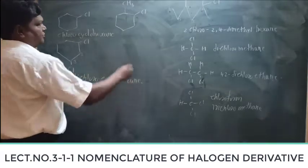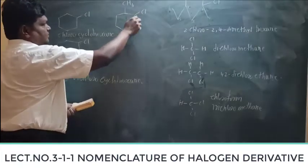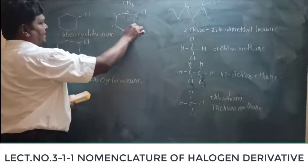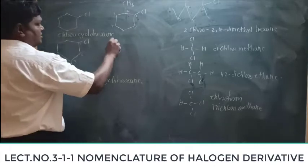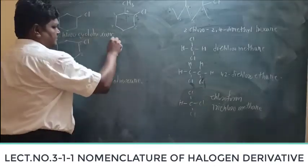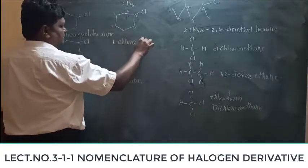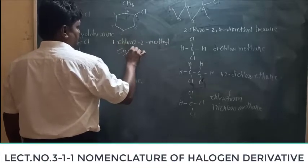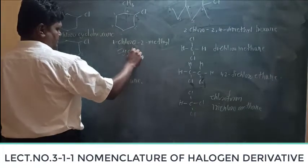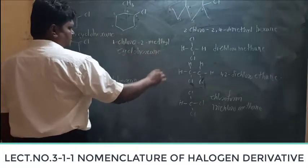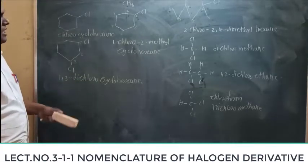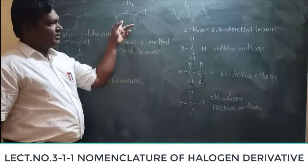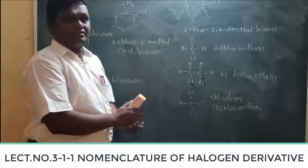For the next cyclic compound, you number starting with position one. You number the ring: one, two, three, four, five, six. You will find this is a 1,3-substituted compound — so the name is 1,3-disubstituted cyclohexane. Let's start with the next set of examples.